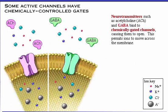We've seen voltage-controlled gates. Now let's look at channels that have gates controlled by chemicals — in particular, by neurotransmitters such as acetylcholine and GABA. When these neurotransmitters bind to chemically-gated channels, they cause the channels to open, thereby permitting ions to move across the membrane.